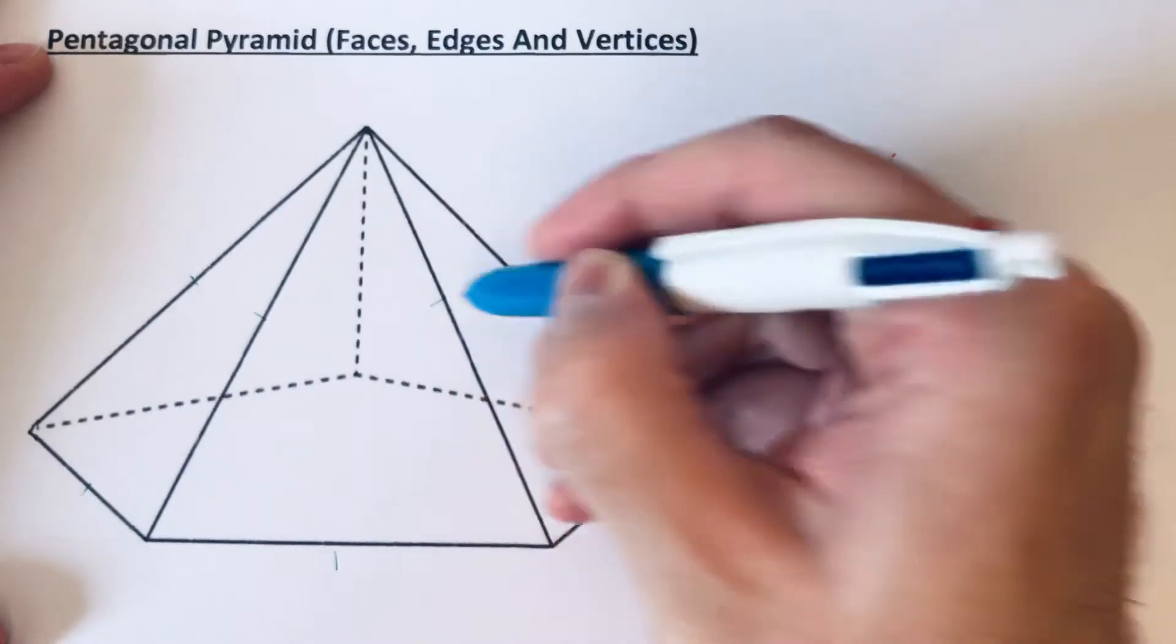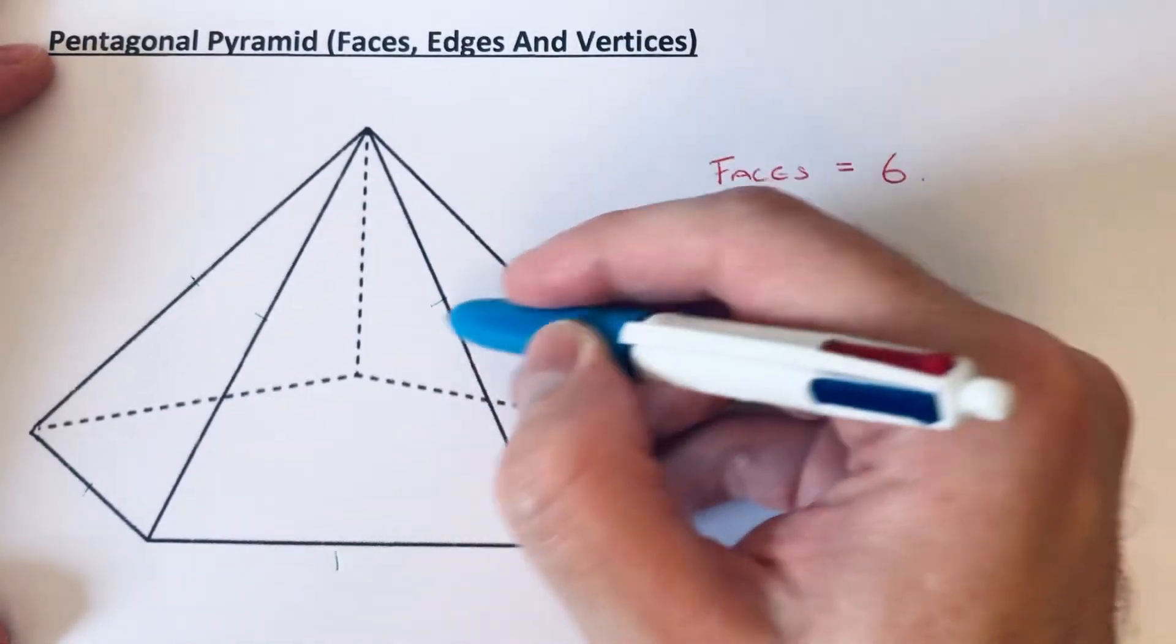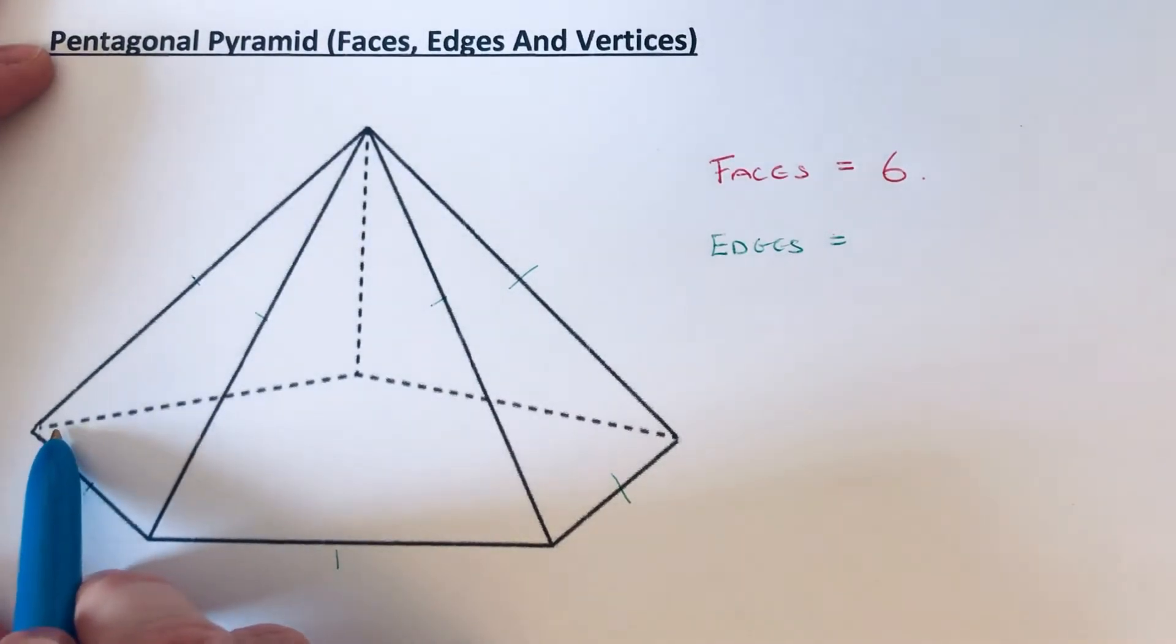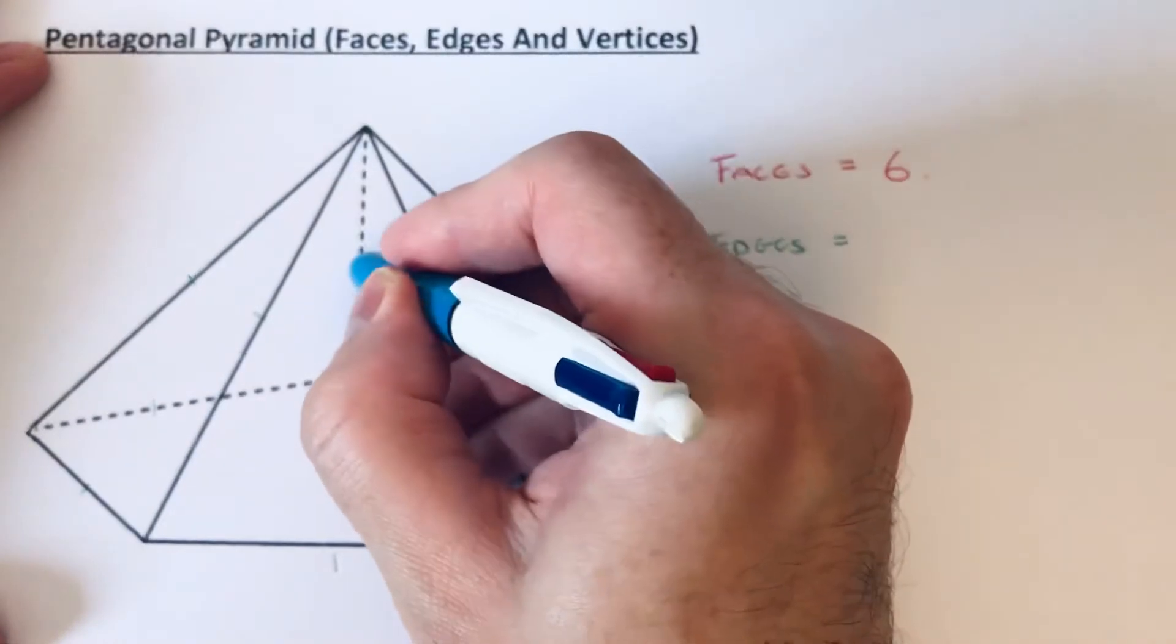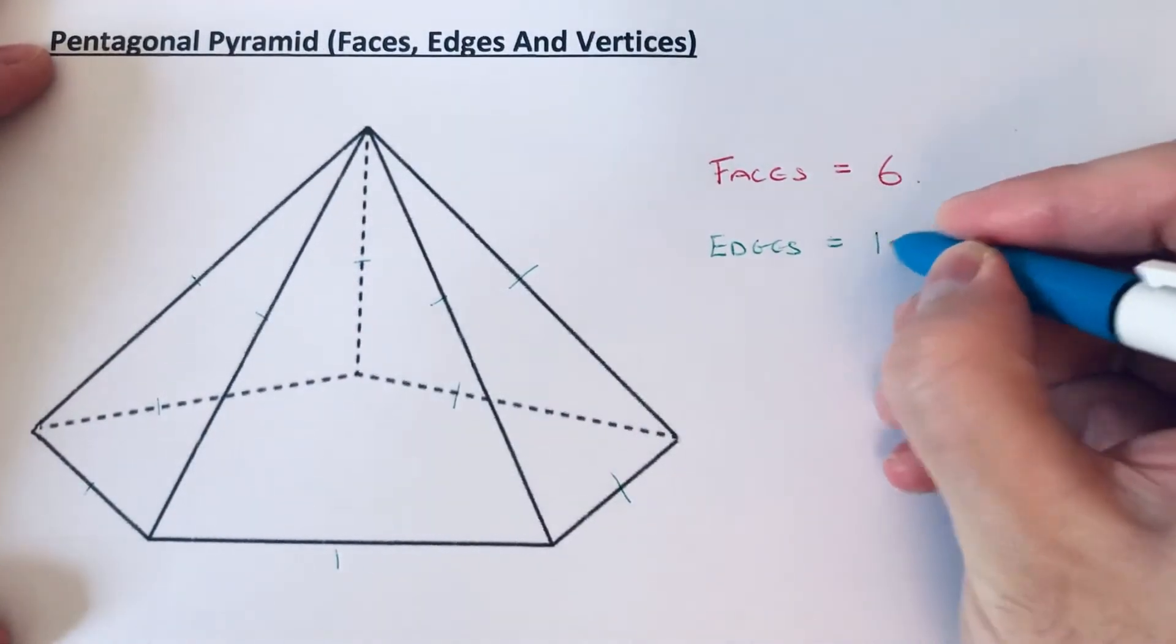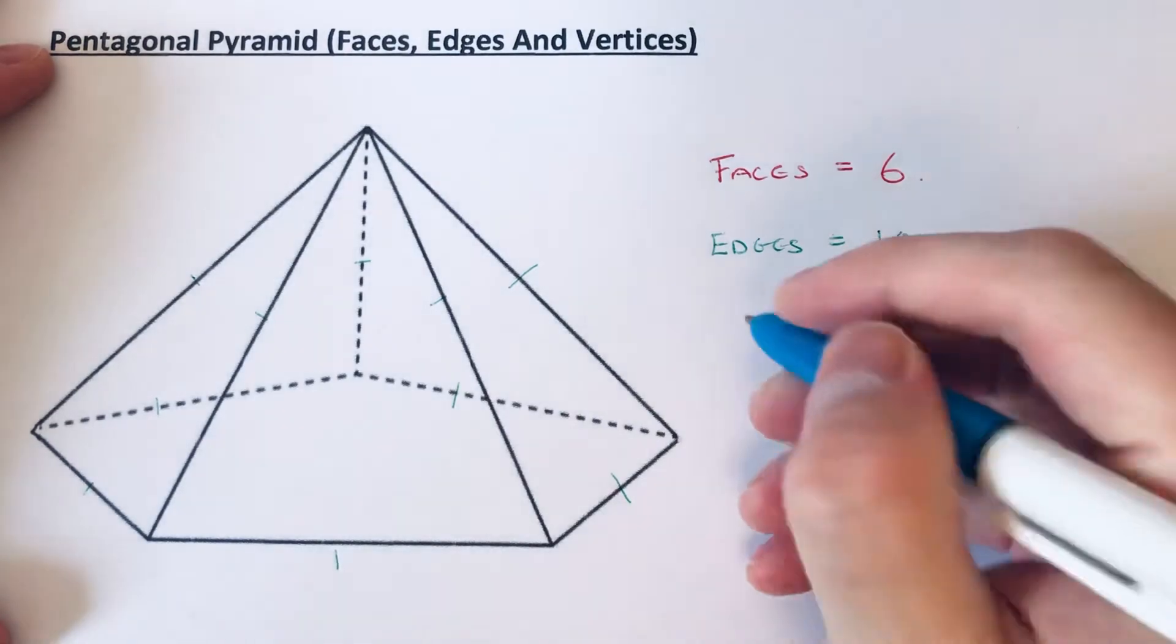four, five, six, seven - and then the ones you can't see which are dotted - eight, nine, and then we've got ten at the back there. And finally, let's count the number of vertices. The vertices are the corners of the pyramid...